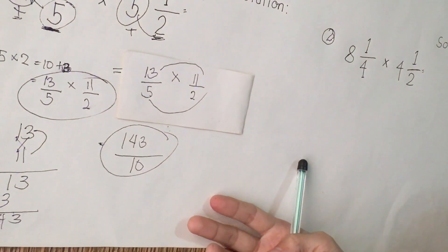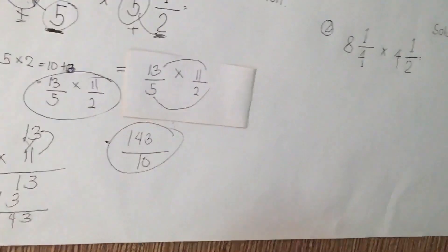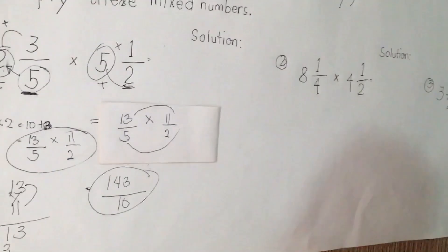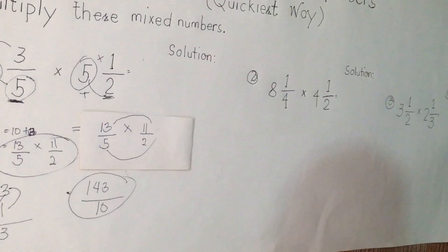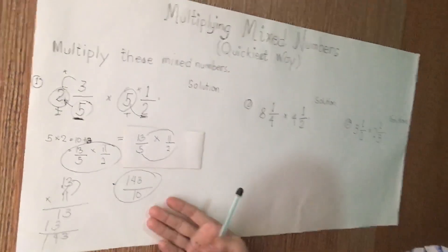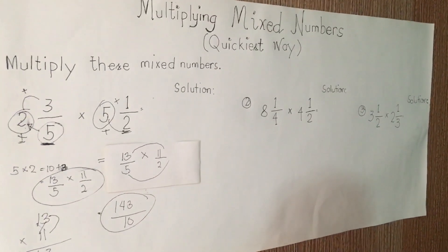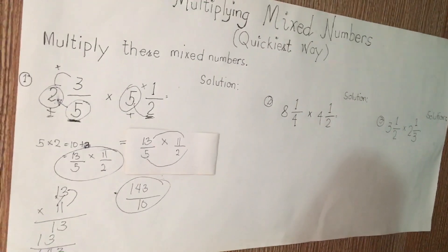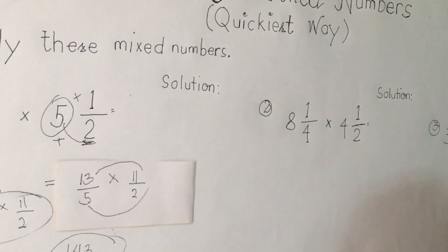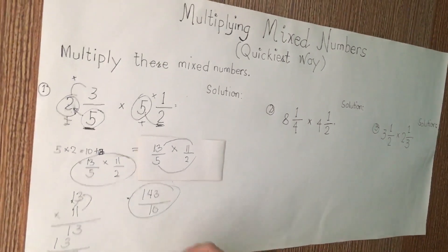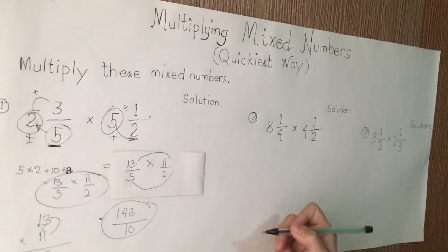Is it done? No, we are not yet done. We are going to simplify or reduce it to lowest term if necessary. But actually, we are going to reduce it because 143 over 10 is improper fractions. So we are going to solve it so that the result will become a mixed number.